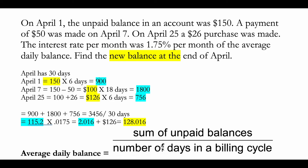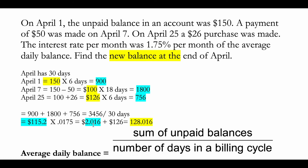The denominator is the number of days in the billing cycle — 30 days for April — giving an average daily balance of 115.2. Multiplying by 1.75% (0.0175), the interest charged for April is approximately $2.02. Adding this to the end-of-month balance of $126 gives a new balance of $128.02 at the end of April.